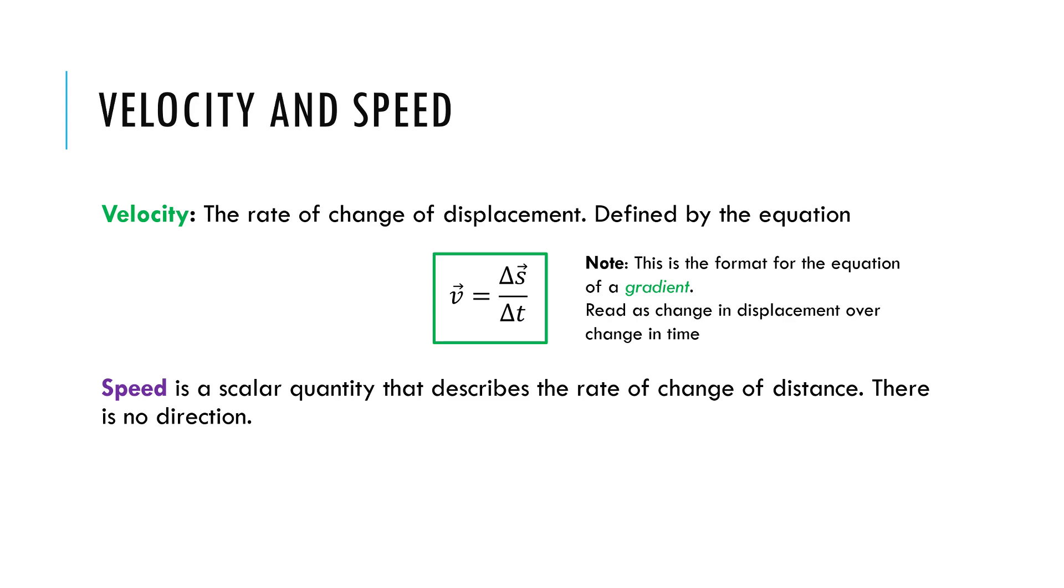All right. And of course, speed is the scalar version. There is no direction. So your speed has to do with your total distance traveled, whereas the velocity has to do with your displacement. So the vectors are tied together. The scalars are tied together.